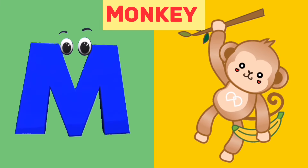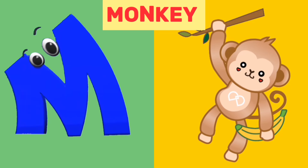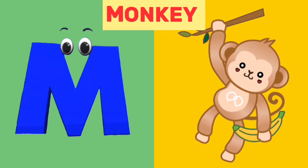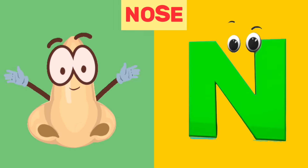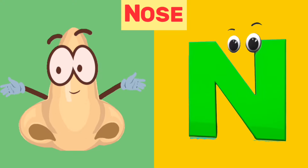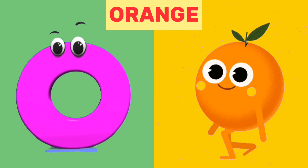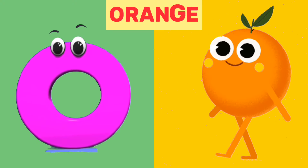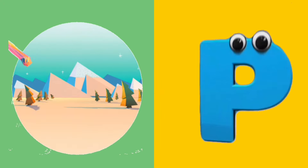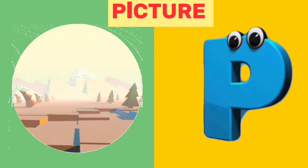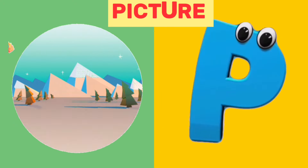M is for monkey. M, monkey. N is for nose. N, nose. O is for orange. O, orange. P is for picture. P, picture.